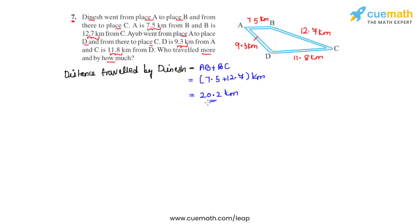Now we will be calculating what is the total distance which was traveled by Ayoub. So that can be written as a sum of AD and DC. So we'll be substituting these values. That is 9.3 plus 11.8 kilometers. Adding these two decimal numbers we get the sum as 21.1 kilometers which is the total distance traveled by Ayoub.